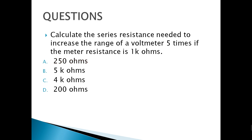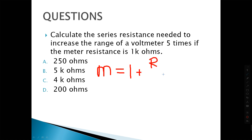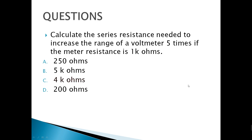Next, calculate the series resistance needed to increase the range of a voltmeter five times if the meter resistance is 1 kilo-ohm. The formula for a voltmeter multiplier is: multiplier = 1 + (R_s / R_m). Substituting 5 for the multiplier and 1 kilo-ohm for R_m, we solve for R_s, and the correct answer is 4 kilo-ohms.